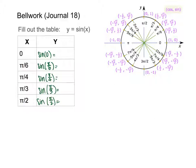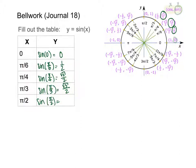Sine gives you the y values on the unit circle, while cosine gives the x values. At radian 0, the y value is 0, so sine of 0 is 0. At pi over 6, sine is 1/2. When sine is pi over 4, it's the square root of 2 over 2. When sine is pi over 3, it's the square root of 3 over 2. And when sine is pi over 2, sine equals 1.